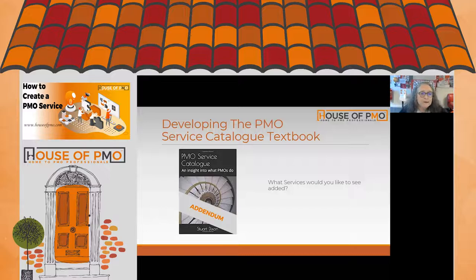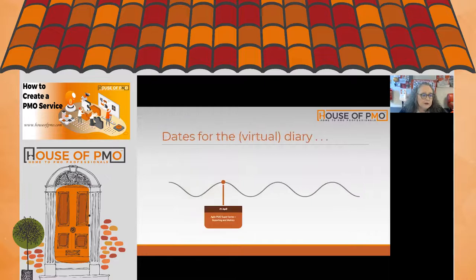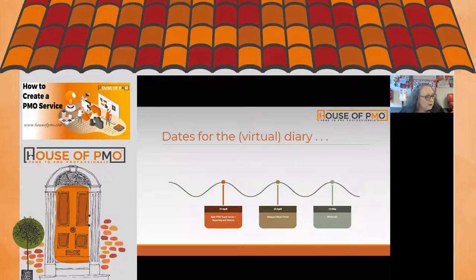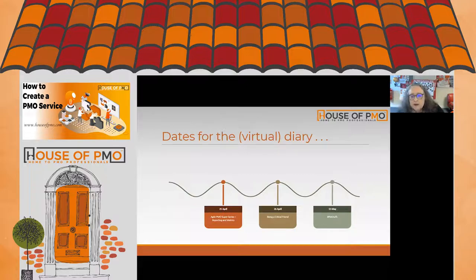Finally, here are the next three dates for your diary. We have a session on reporting and metrics from an agile perspective, and on the 26th of April a great session on being a 'critical friend' — featuring someone who actually does that full-time as their job. Look forward to seeing you there.